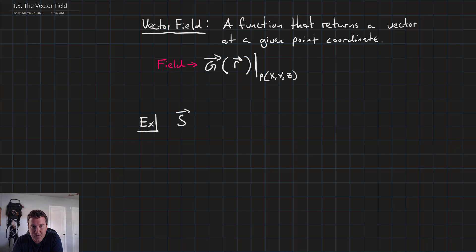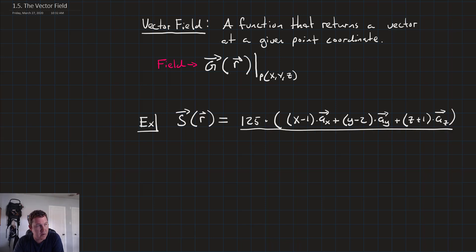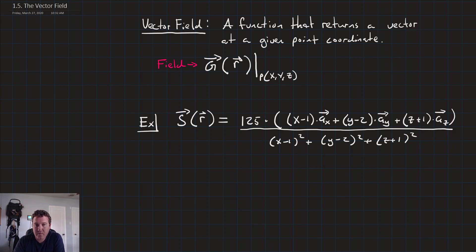Suppose that we have vector field S, a function of vector r. It's going to be equal to 125 times (x minus 1) times the unit vector a_x, plus (y minus 2) times the unit vector a_y, plus (z plus 1) times the unit vector a_z. That whole expression is over (x minus 1) squared plus (y minus 2) squared plus (z plus 1) squared. There's our whole vector field expression.